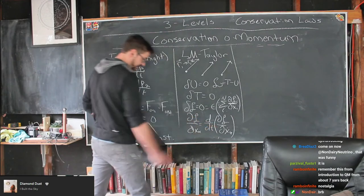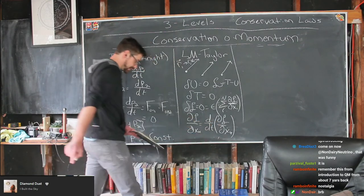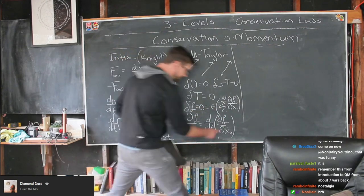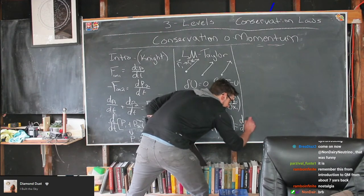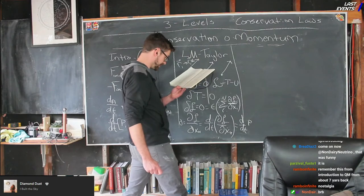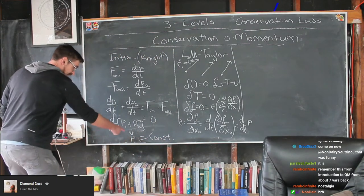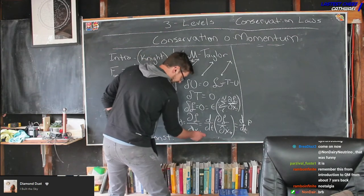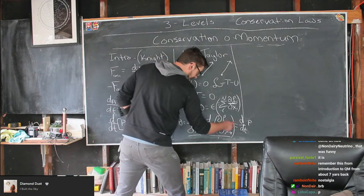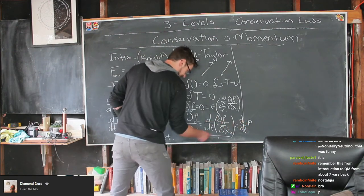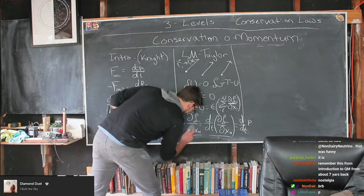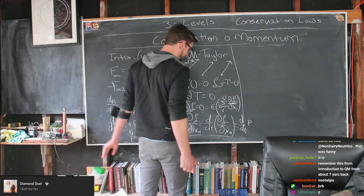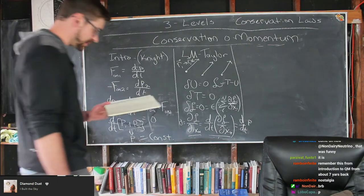That derivative of the Lagrangian with respect to velocity is just the momentum. So summing over all particles, we get d/dt of the total momentum equals zero. This is the same result we found in introductory physics: the total momentum is conserved. That's what you learn in Lagrangian mechanics, typically in second or third year.